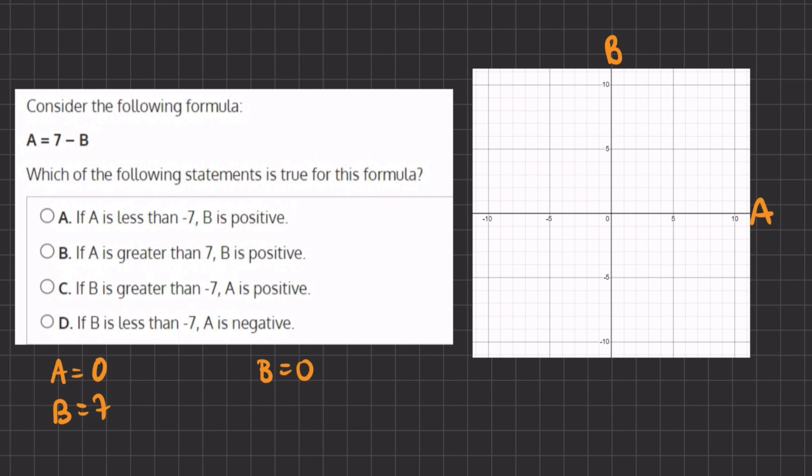And when B equals 0, let's plug in 0 for B, we have A equals 7 minus 0. Now if we simplify, we have A equals 7. So when B equals 0, A will equal 7.